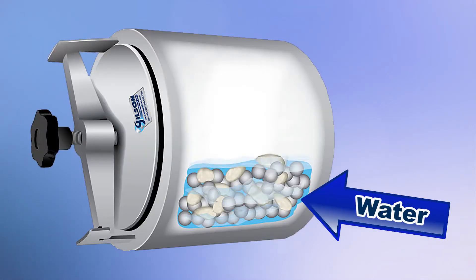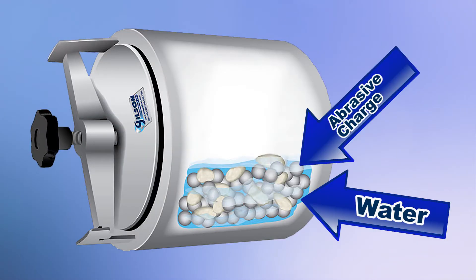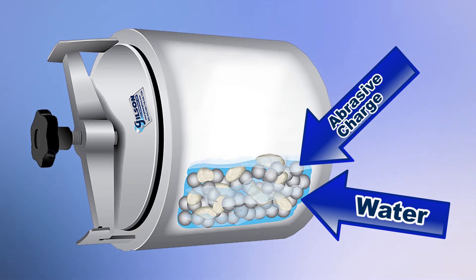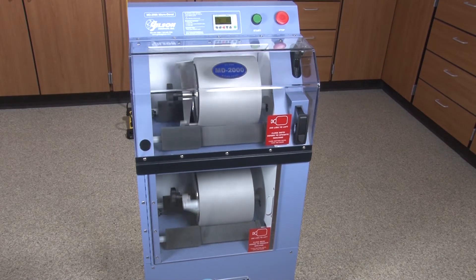The micro-deval is an abrasion loss test performed on fine or coarse aggregate samples that are partially submerged in water. Along with an abrasive charge, samples are placed in jars that are rotated for a prescribed time and speed.